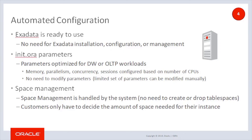Most of these parameters cannot be modified, and the few that can be modified should only be done for very specific reasons by qualified DBAs — this is discouraged in Autonomous Database. Table space management is performed automatically by the Oracle Autonomous Database and cannot be changed by the customer. Customers have full access to view the information of the space allocated to their instance, but it cannot be changed. The only input the customer needs to provide is the number of terabytes of data they would like the database to be able to hold. This number can be increased or decreased in real time, and the Autonomous Database handles adjusting data location based on this user setting.